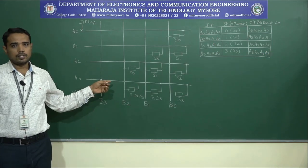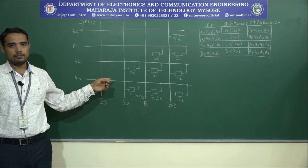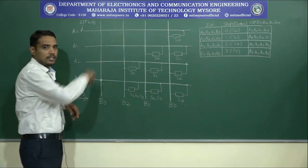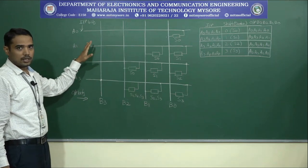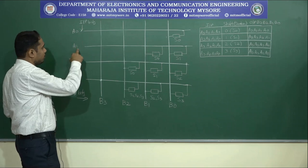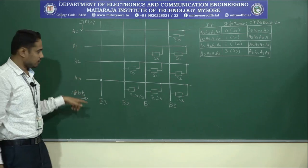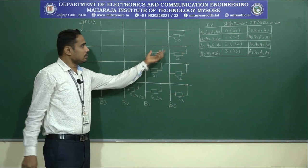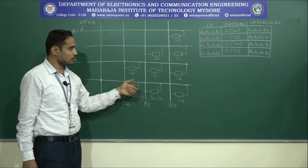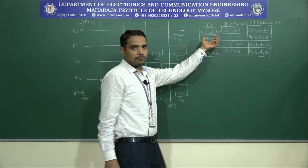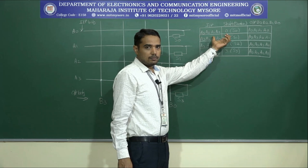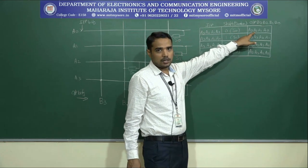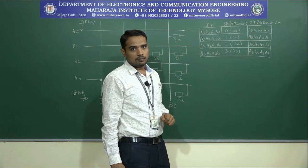This is an implementation of a 4-bit right-shift barrel shifter. In this implementation, we can see a matrix arrangement comprising inputs and outputs. A0, A1, A2, A3 are the input bits, while B3, B2, B1, B0 are the output bits. S0, S1, S2, S3 are the switches involved. We have the input, the switches, and the corresponding output across B3, B2, B1, and B0.